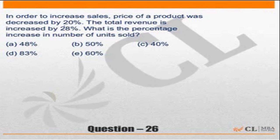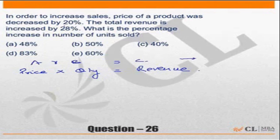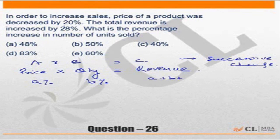To increase sales, the price of the product was decreased. The first thing we need to understand is that price into quantity is nothing but revenue. Whenever you have this format of A times B equals C, you can apply the successive increments or successive change formula. The percentage change in price is A%, percentage change in quantity is B%, and the percentage change in revenue should be A plus B plus AB by 100.